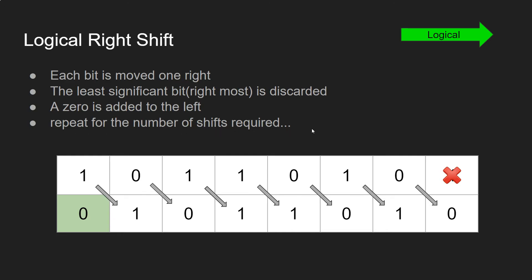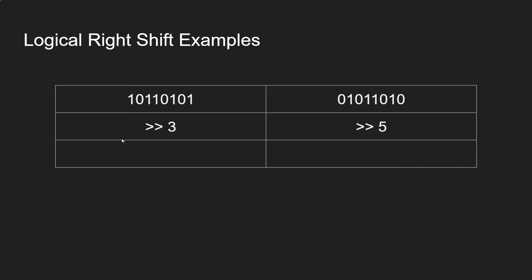You just repeat for the number of shifts required. Let's have some examples: we're going to shift this one by three to the right and this one by five to the right. In the first example, we've lost the three right-hand bits and the left hand side is padded with three zeros. In the second, we've moved along five places, keeping only three digits, with the rest padded out with zeros.